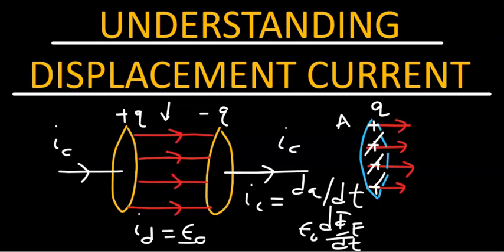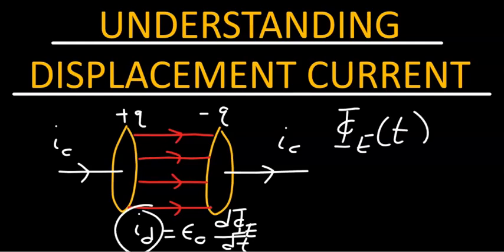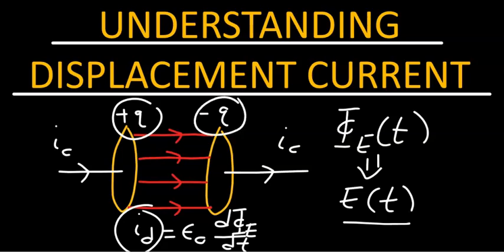We represent the displacement current with subscript D, as opposed to subscript C used to denote the conduction current. The displacement current is given by epsilon-naught — the permittivity of vacuum, since the region in between is filled with vacuum or air to a good approximation — times the rate of change of electric flux in the region between the plates. As long as the electric flux is changing with respect to time, there will be displacement current, and for that to happen, the electric field must be changing with time, which means the charge on the plates must also be changing with time.